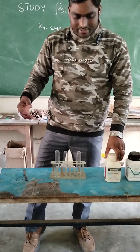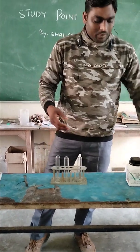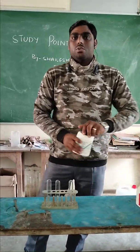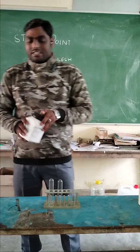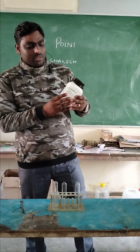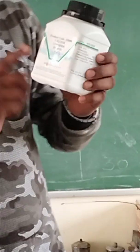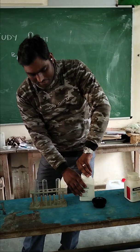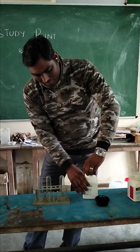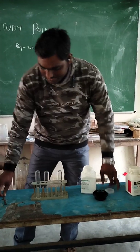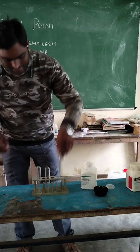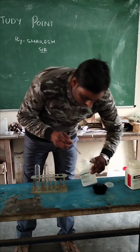Let us start our experiment. I am going to show you how we are going to make different types of mixtures like Solution, Colloid, and Suspension. So first, I am going to use salt — that is Sodium — sorry, Calcium chloride. And we are going to dissolve it in the water and observe what type of mixture is going to be formed. Dissolving the Calcium chloride inside the water.